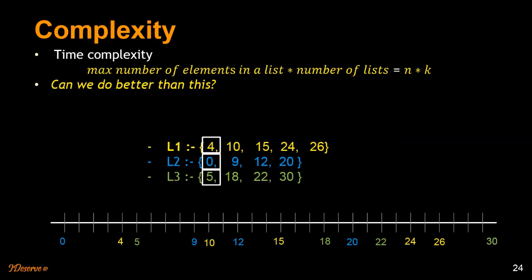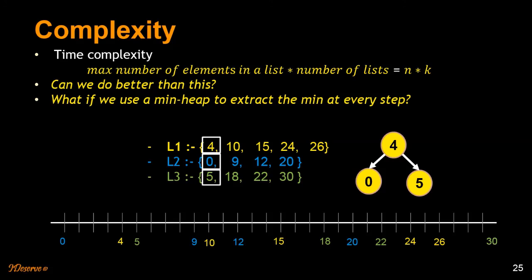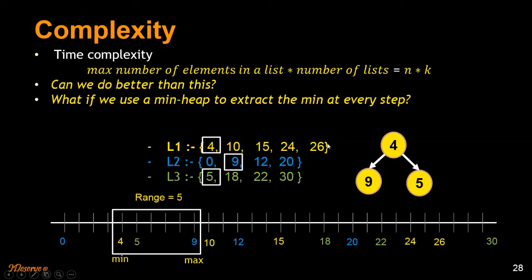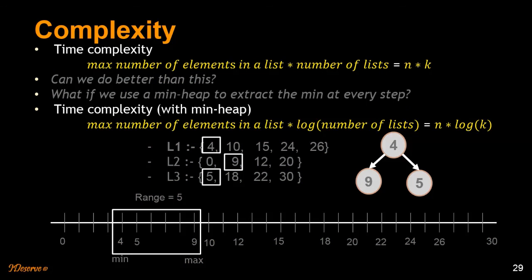Can we do better? If we use a min-heap to extract the minimum at every step, we heapify all current pointed elements and get the minimum at the top. After moving into the minimum list, we update the heap. This reduces the minimum extraction from O(k) to O(log k), making the overall complexity O(n × log k).